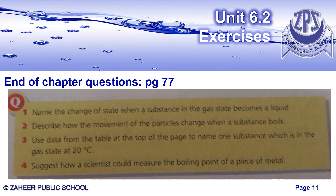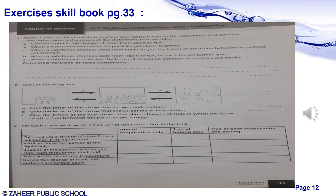Now come to the exercises given at the end of your chapter on page number 77. In the first question, write down the name of the change where a substance in the gaseous state turns into liquid state. In the second question, write how the movement of particles changes when a substance boils. In the third question, from the data given in the table, write the name of the substance which is in the gaseous state at 20 degrees centigrade. In the last question, suggest how scientists could measure the boiling point of a metal.